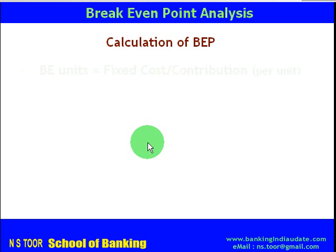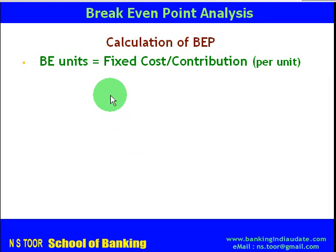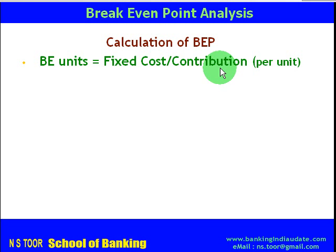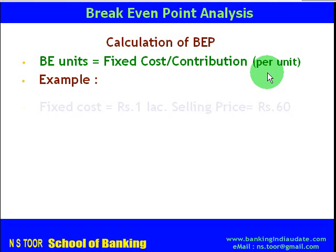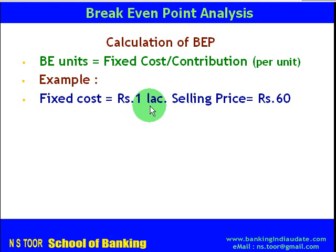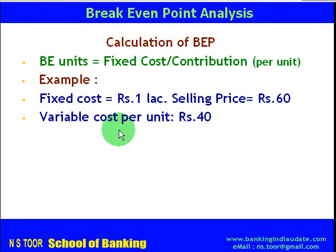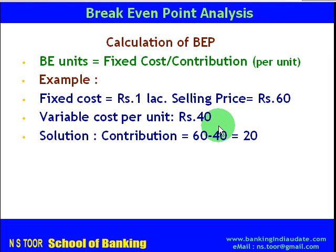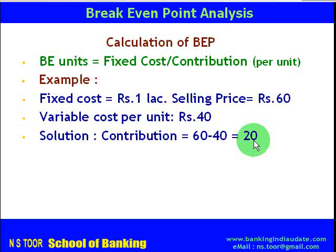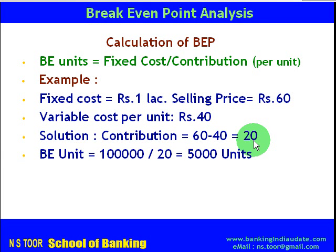Now, how to calculate breakeven? Breakeven units are equal to fixed cost divided by contribution per unit. For example, fixed cost is Rs 1 lakh, selling price is Rs 60, and variable cost is Rs 40. Contribution per unit equals selling price minus variable cost, so 60 minus 40 equals Rs 20. Breakeven equals fixed cost of Rs 1 lakh divided by contribution per unit of Rs 20, giving breakeven of 5000 units.